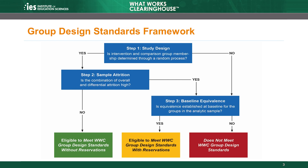Attrition is a key element of the WWC's Group Design Standards Framework. This framework was introduced in the Group Design Module, which is Module 1. As illustrated in the framework, once a review determines that a study used a random process to assign units to groups, the WWC then considers the level of sample attrition that occurred in the study.